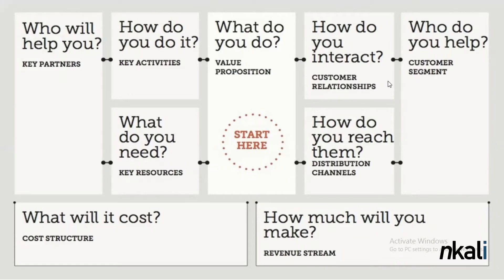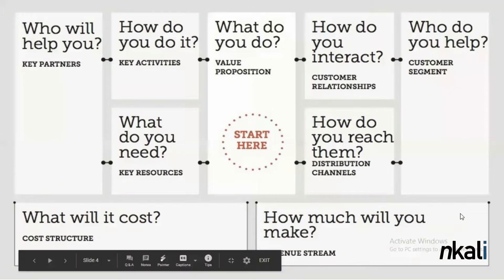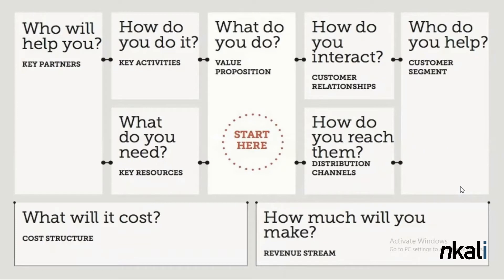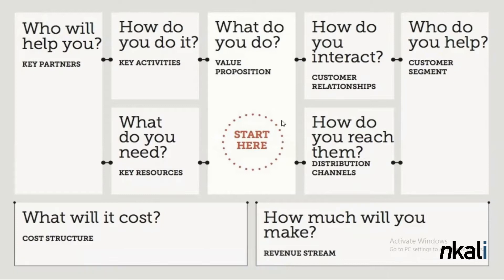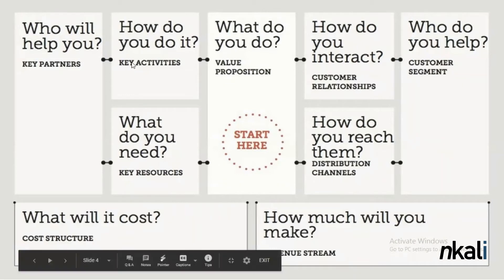We have the revenue stream. Every business — except if you are an NGO — if you're a for-profit business, you have to think about how you're going to make money, how much you'll make, which is your revenue stream. This is where you put all your revenue streams. Everything on the right side of the canvas is really going to tell you how you're going to make money, which is why the revenue stream is under it.